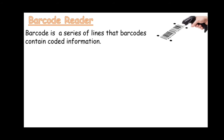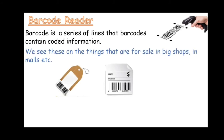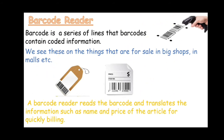Barcode reader. I think you all must have seen this type of machine at any shop or mall. A barcode is a series of lines that contain coded information. We see these on things that are for sale in big shops, malls, etc. A barcode reader reads the barcode and translates the information such as the name and price of the article. Items can be barcoded for quick billing, and they are also used in other places such as libraries, luggage check-ins, and flights.